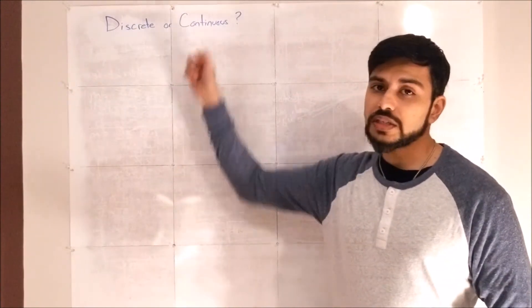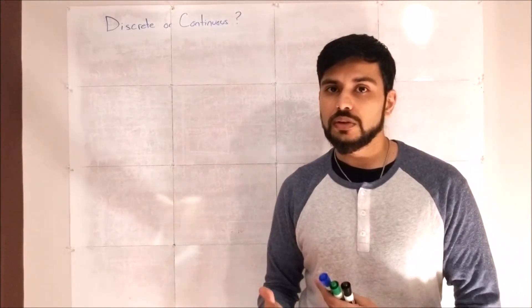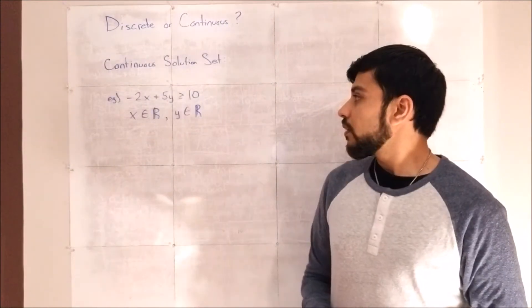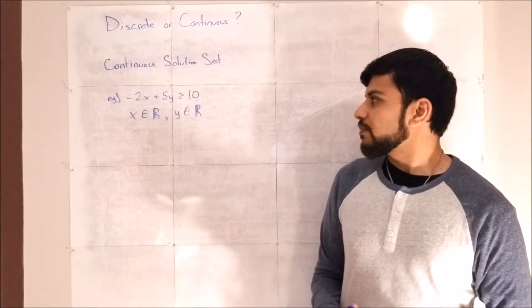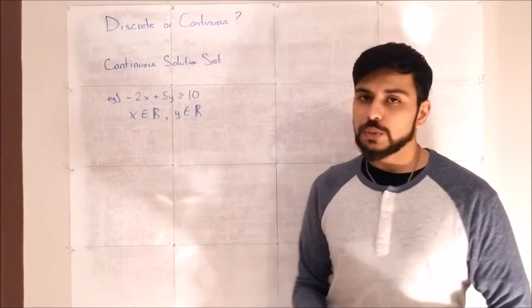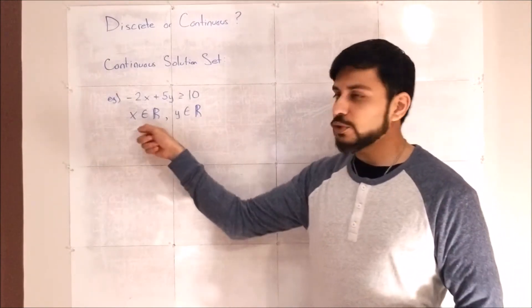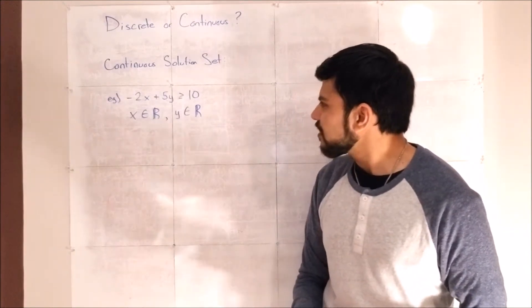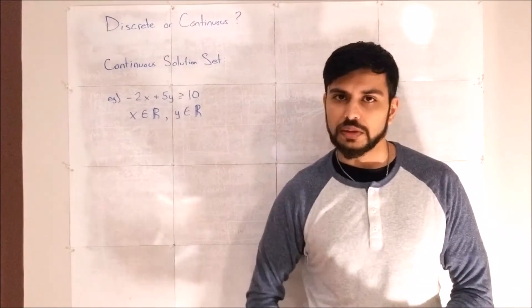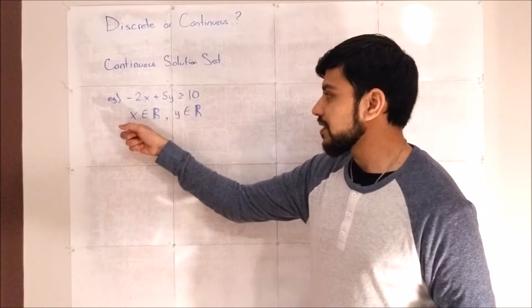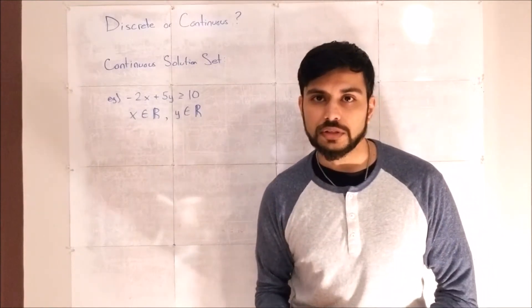Well, continuous is when all values are valid. And you might see it written like this. Negative 2x plus 5y is greater than or equal to 10. That's the equation we had before, but it added some extra information here. It says x, there's this, what looks like a c with a line through it or some funky looking e. In fact, it is a funky looking e. It stands for an element. So x is an element of all real numbers.